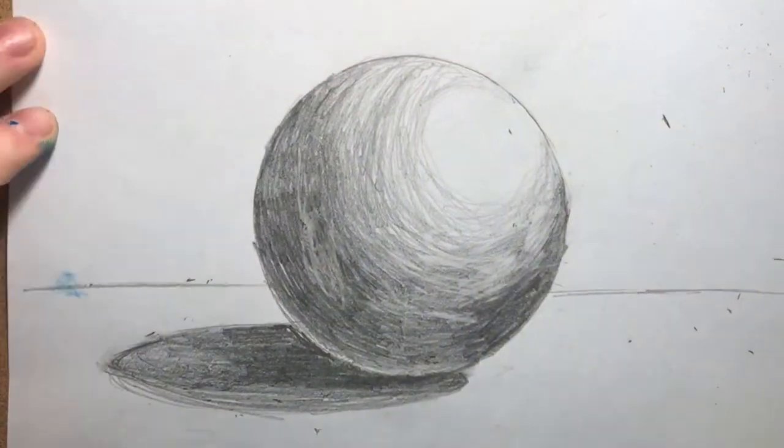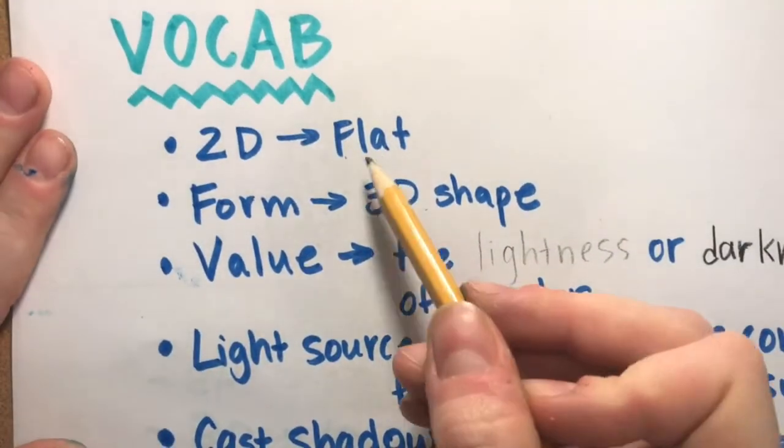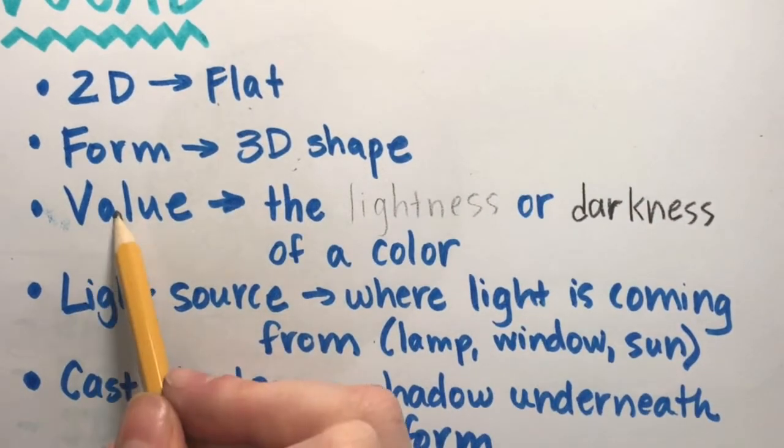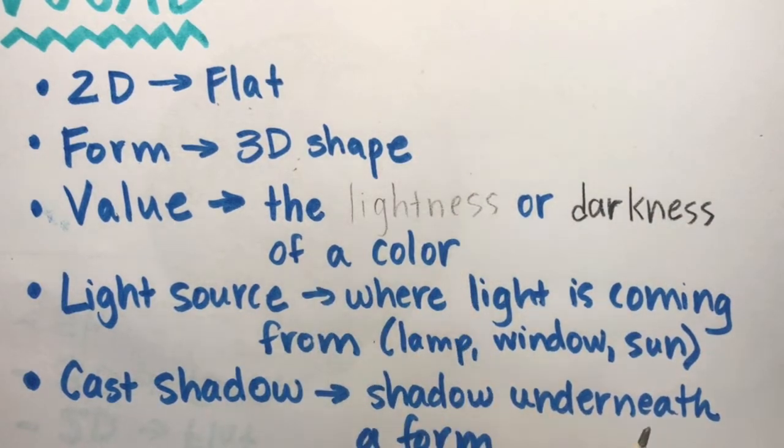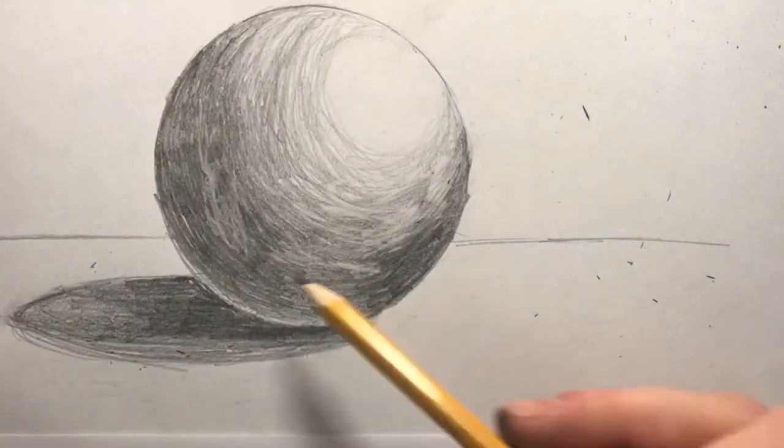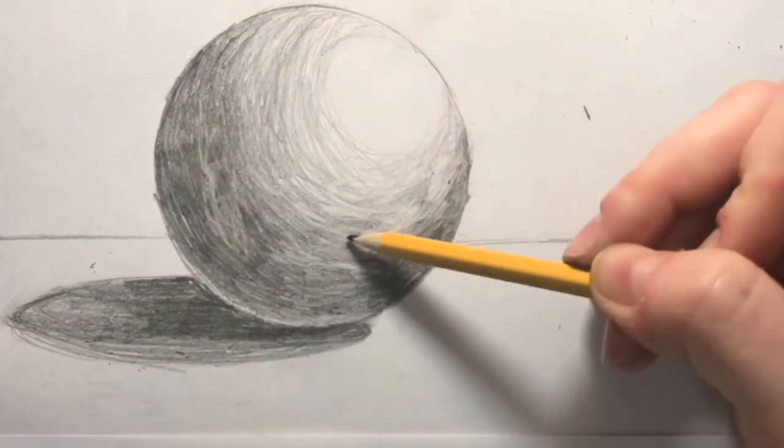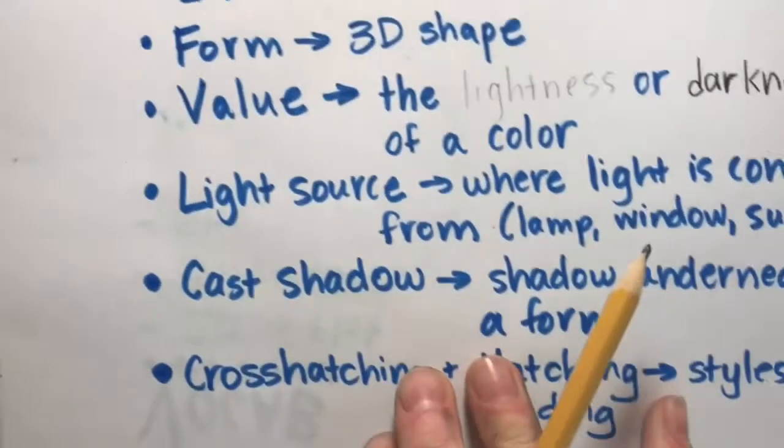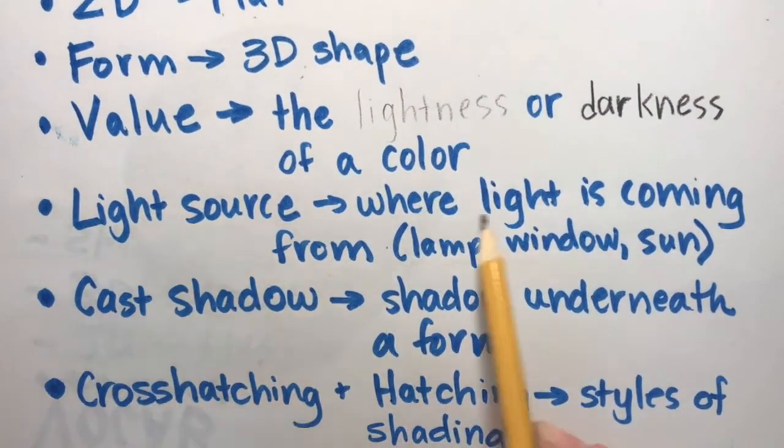Let's reflect back to make sure I have all the things I need on my sphere. First, I'm making a 2D artwork of a form or a 3D shape. I used value to show dark, medium, and light parts on my sphere. I have a light source helping to show where my lightest parts are.